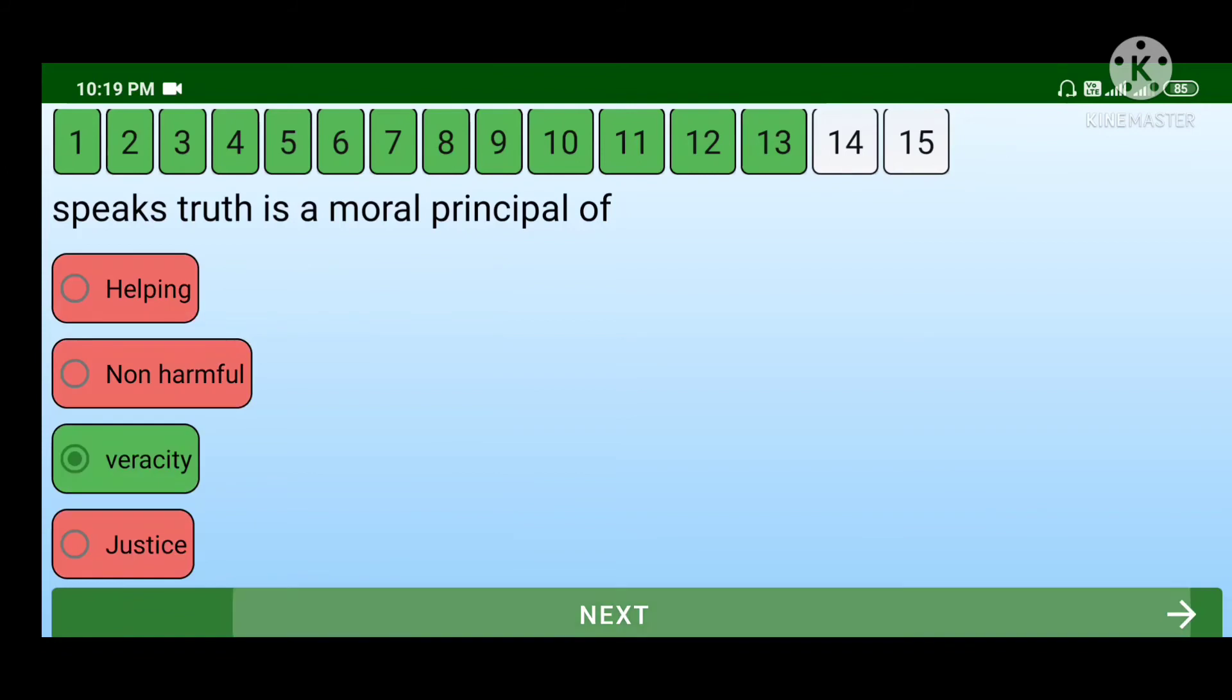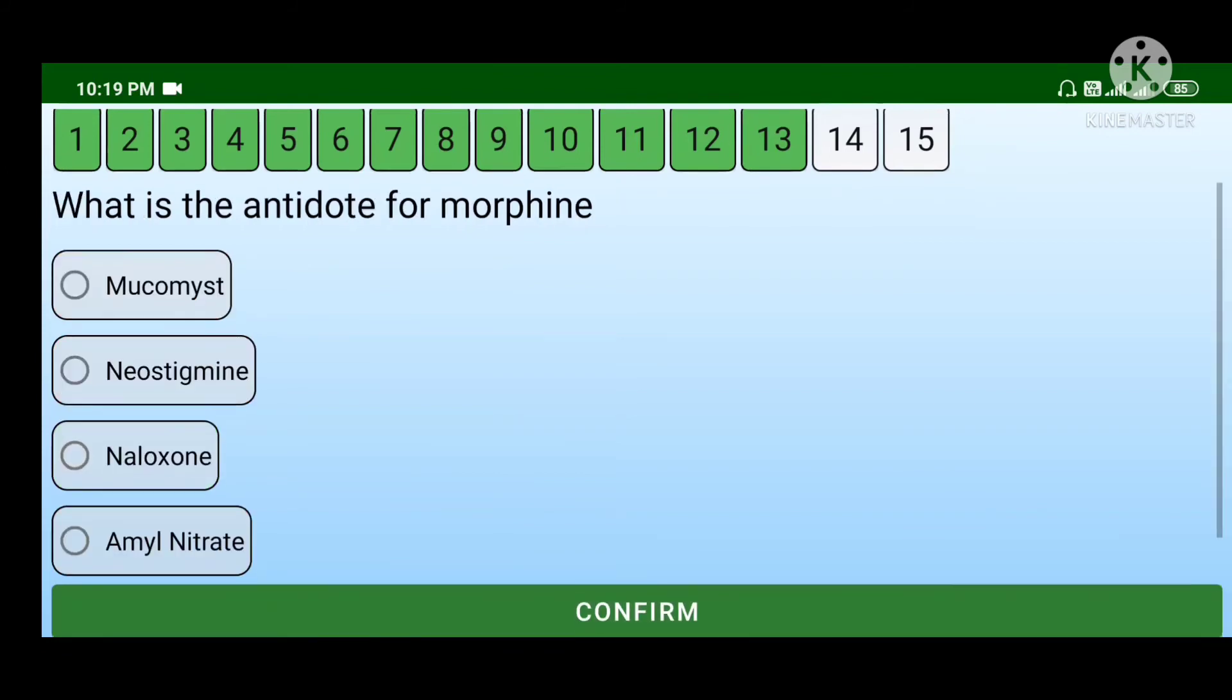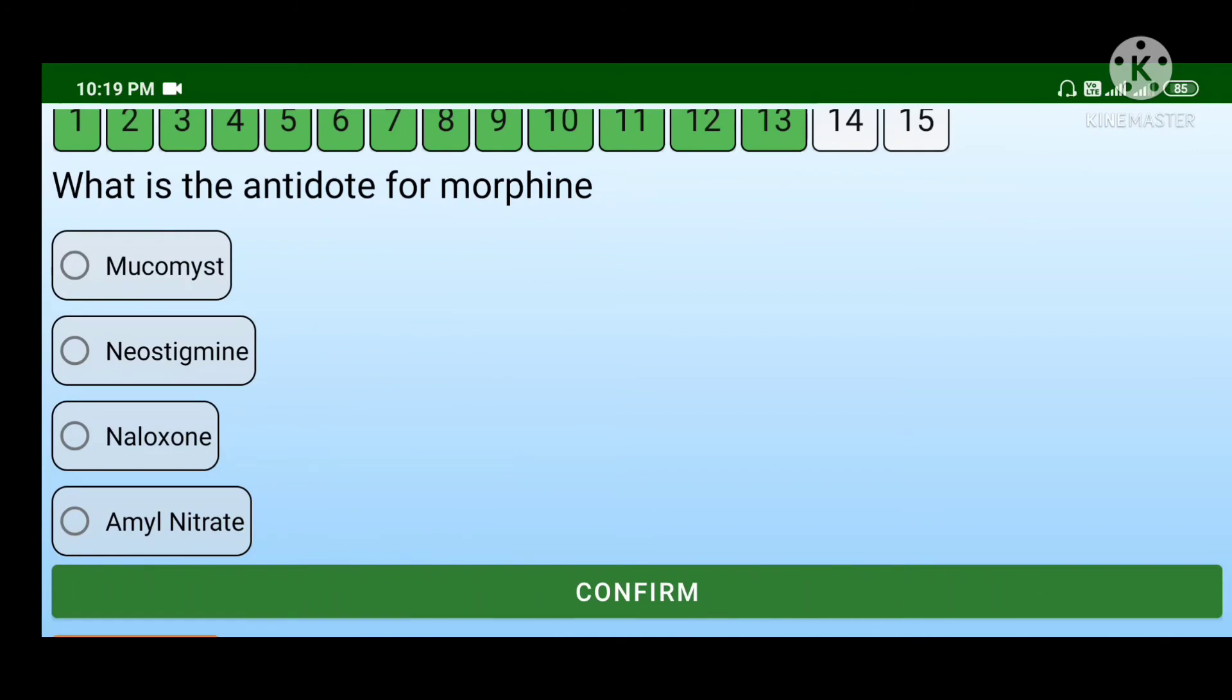What is the antidote of morphine? Mucomist, neostigmine, naloxone, or amyl nitrate. The answer is naloxone.